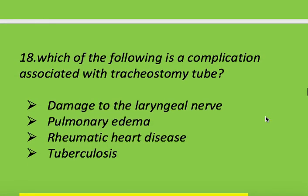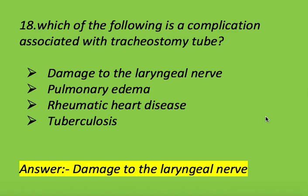Next question: which of the following is a complication associated with a tracheostomy tube? Options: damage to the laryngeal nerve, pulmonary edema, rheumatic heart disease, and tuberculosis. Right answer is damage to the laryngeal nerve. Complication associated with tracheostomy tube is damage to the laryngeal nerve.